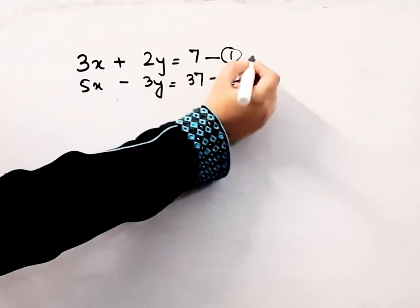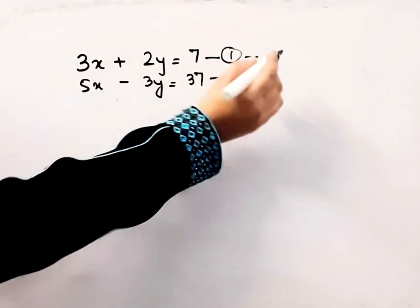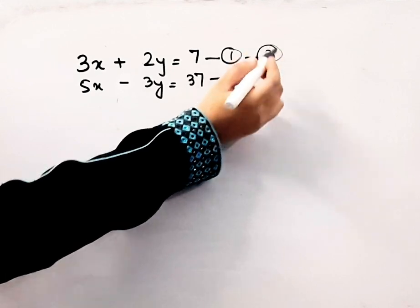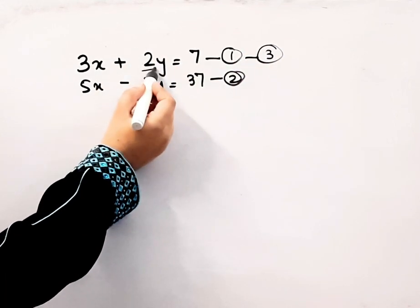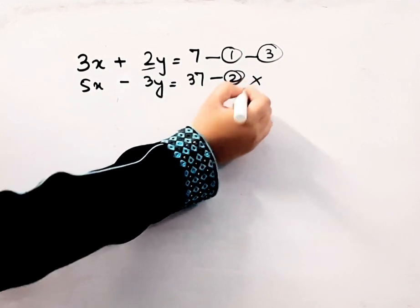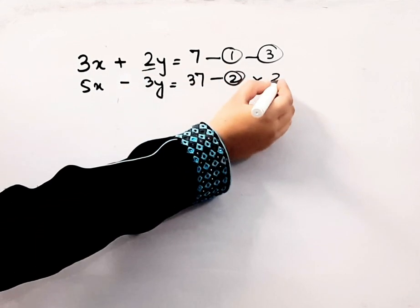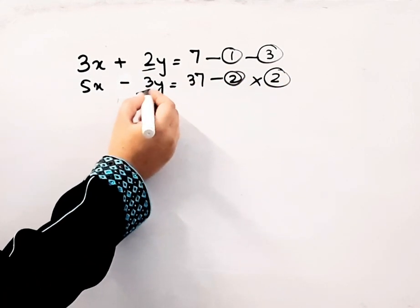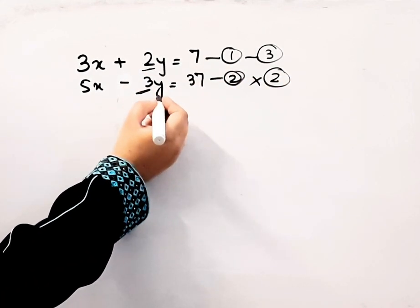What will I do? I will multiply equation 1 with 3. Why am I doing so? So that this becomes 6y. And I will multiply equation 2 with 2, so that this again becomes 6y.